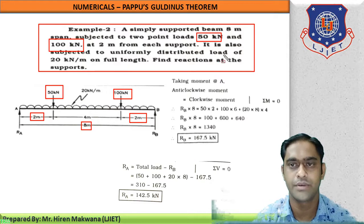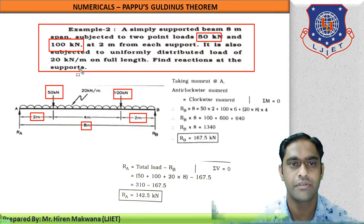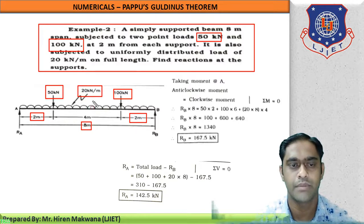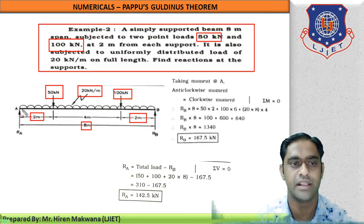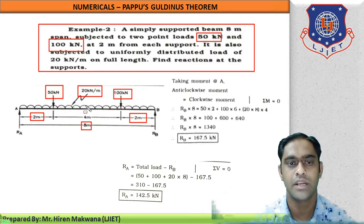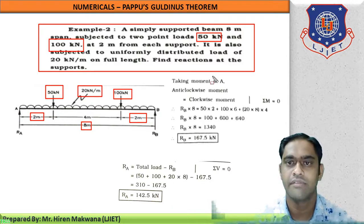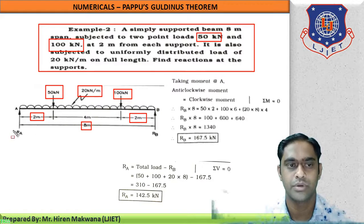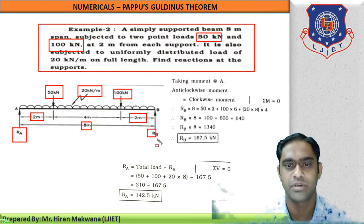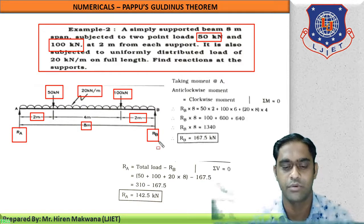The beam is also subjected to a uniformly distributed load (UDL) of 20 kN per meter over the full length. The UDL is shown with a roof-type symbol. We need to find the reactions at the supports: reaction RA at support A and reaction RB at support B.